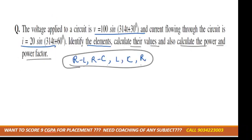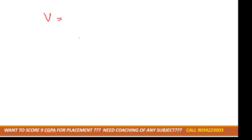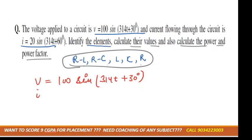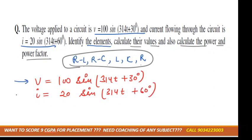The voltage is given as 100 sin(314t + 30°) and current is 20 sin(314t + 60°). Now we have to compare this equation with the standard equation. What is the standard equation?